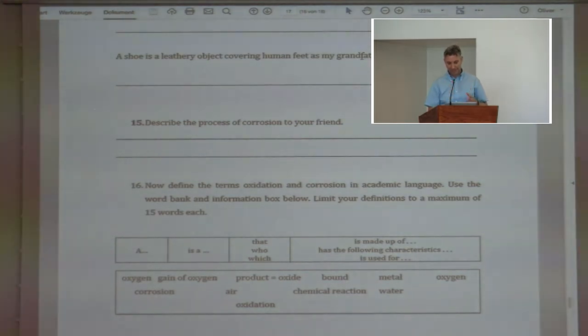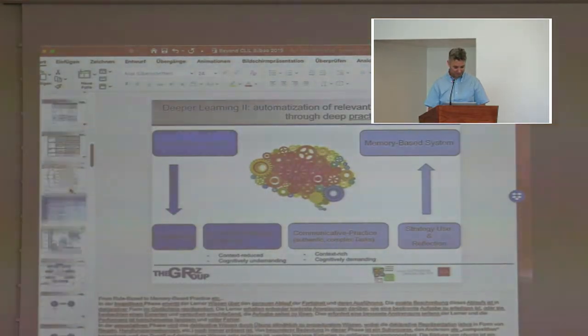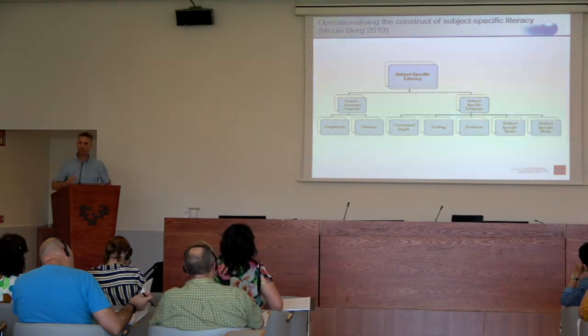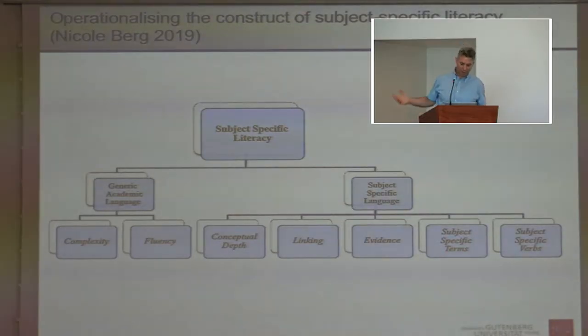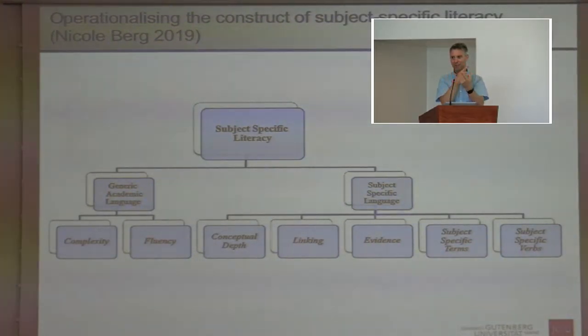That's the problem with the construct of cognitive academic language proficiency — I think it's more complex than Jim Cummins had anticipated in the 1980s. What you see here is the construct that Nicole used in her PhD, where we use all the latest research in psychology and everything to conceptualize what we mean by subject-specific literacy and how we can measure it. What we realized is that it's basically not possible to separate them — students will use everyday language and mix it with academic language, so these are much more interrelated.